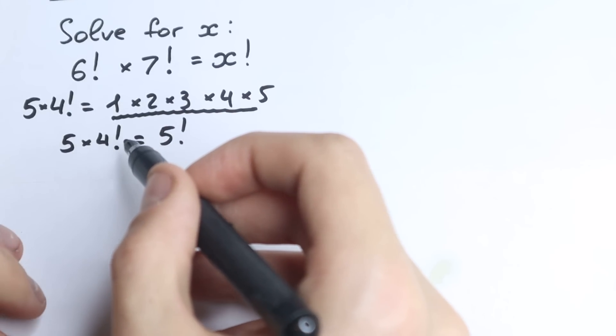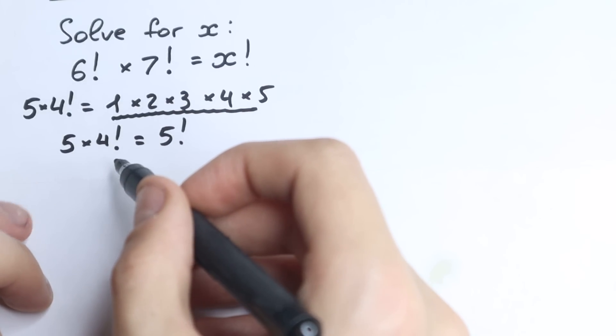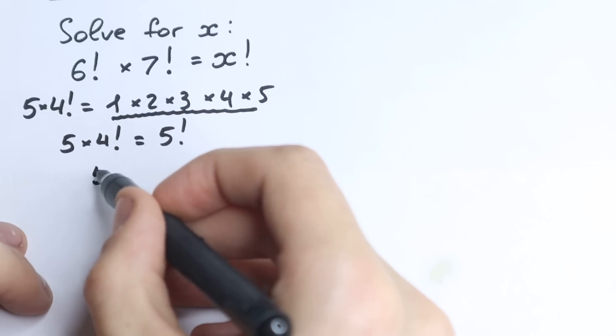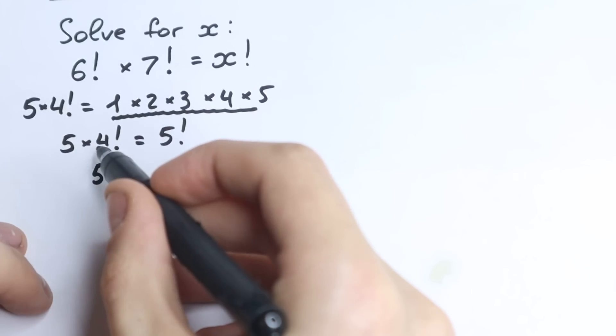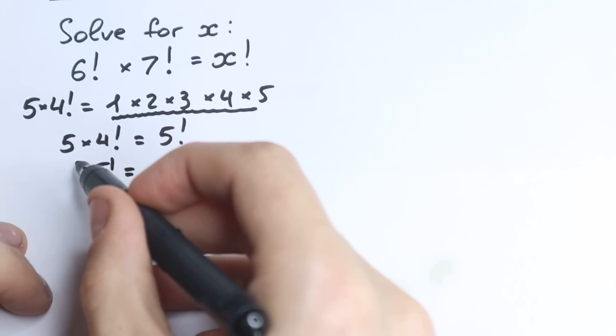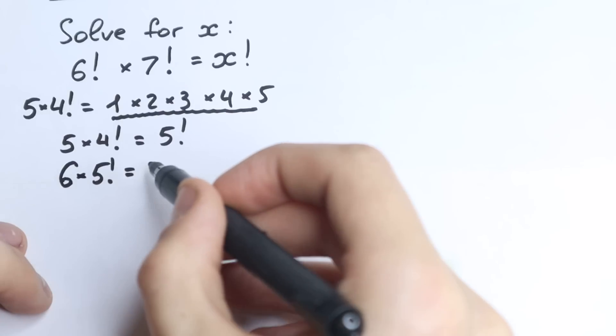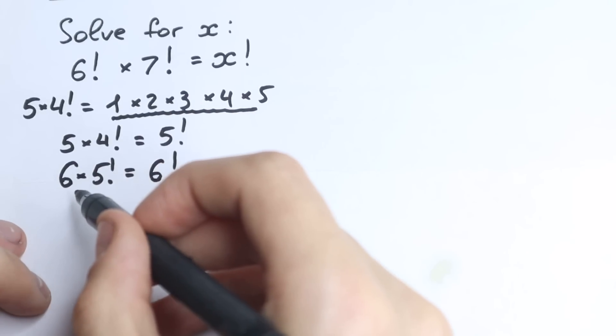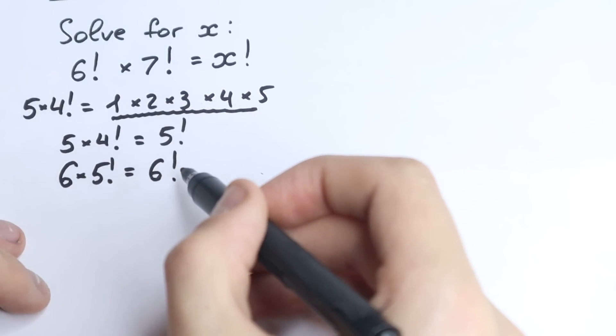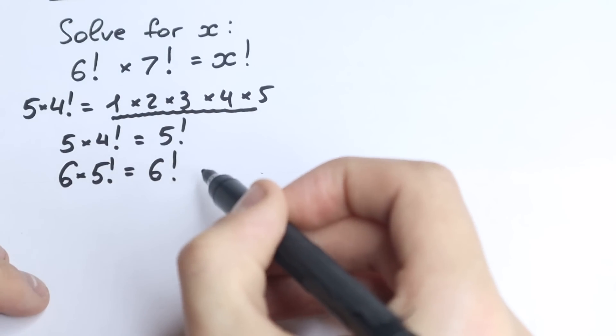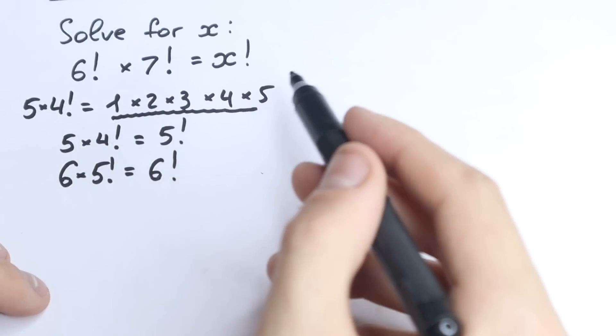So for example, imagine you have like 5 factorial right here. So if you multiply 5 factorial by the next number, greater by 1, so if we multiply by 6, this is equal to 6 factorial. Okay, so I hope you understand this. This is a very important formula. And we are going to apply this formula right here.